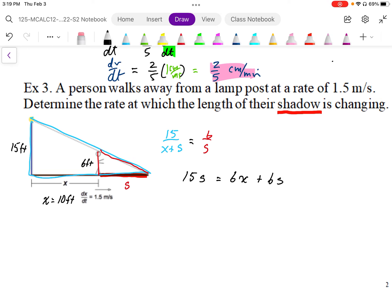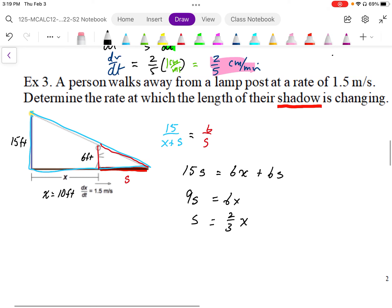And what that ends up doing is, when we combine the like terms, we end up with 9s equals 6x. So we know that the value of s, due to the similar triangles, is going to be 2 thirds the length of x. Okay, based on this similar triangle of 6 feet to 15 feet of height, the ratio of the length of s to x is 2 thirds of x.